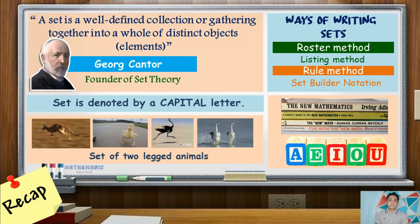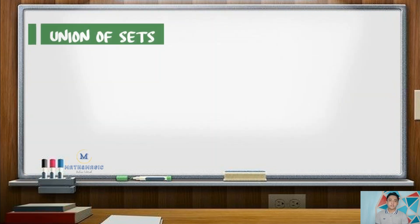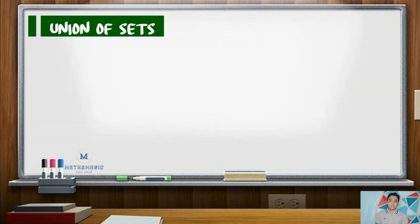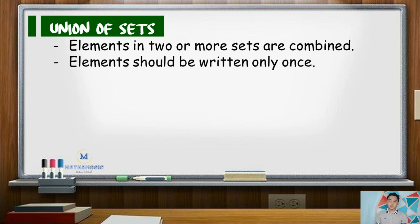For our first operation, the union of sets — here we combine all the elements given in two or more sets. Also take note that in listing the union of sets, elements should be written only once.